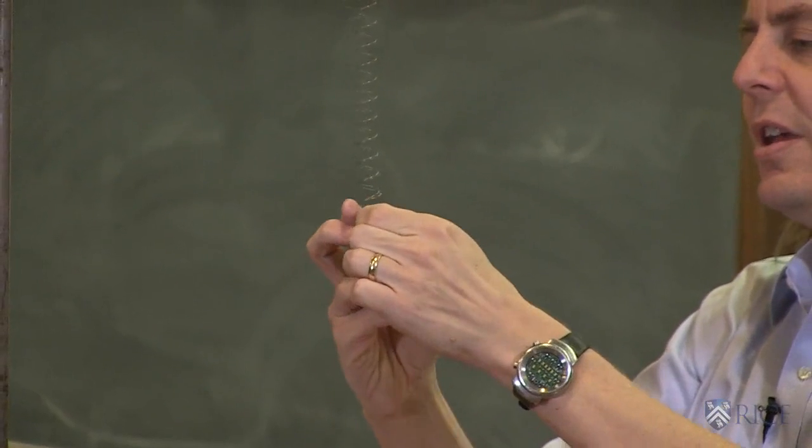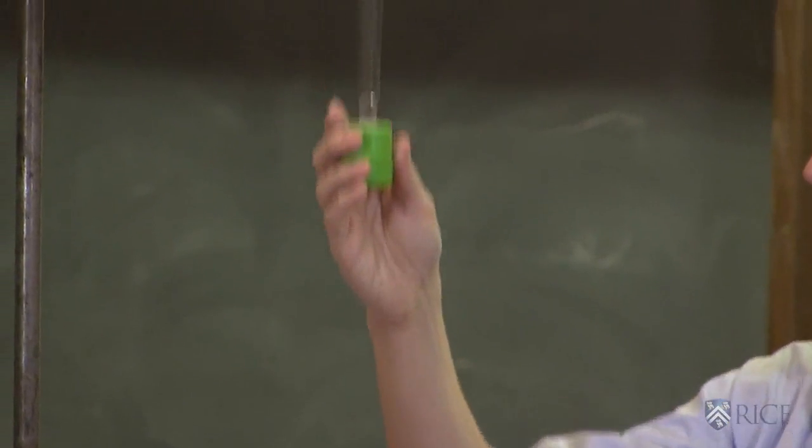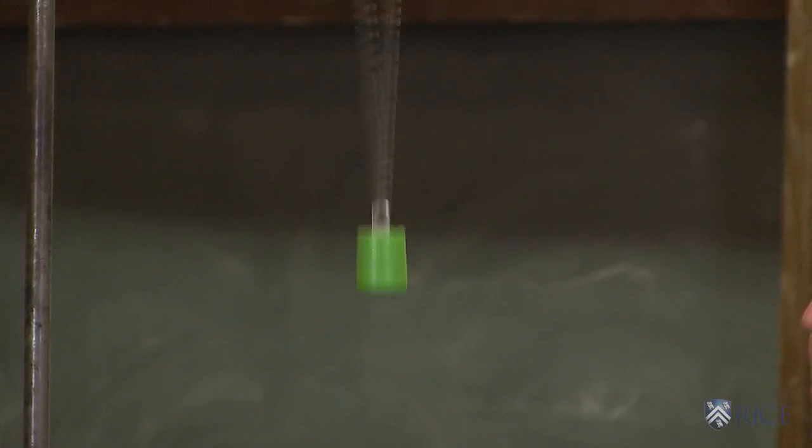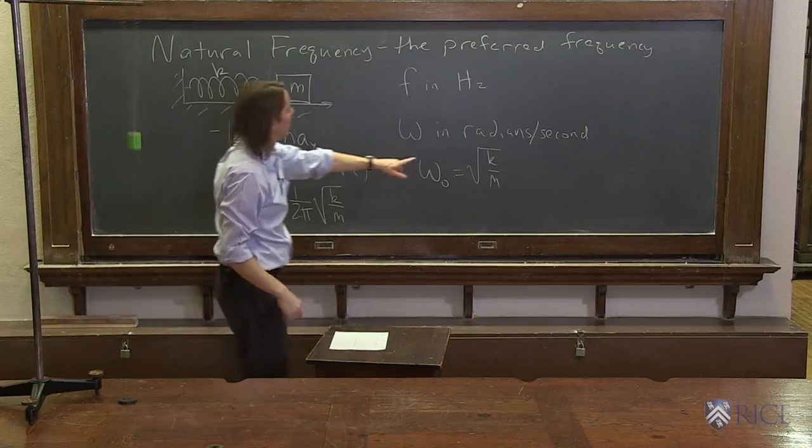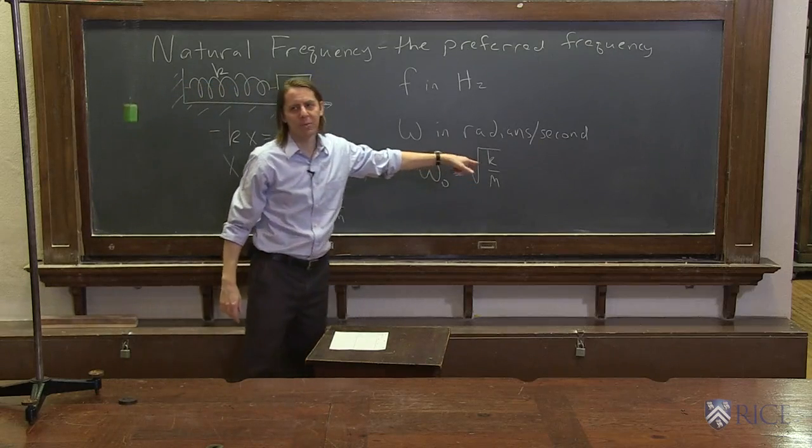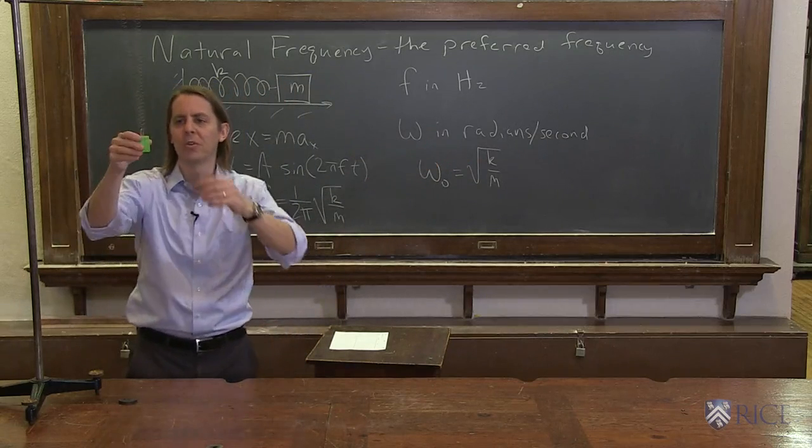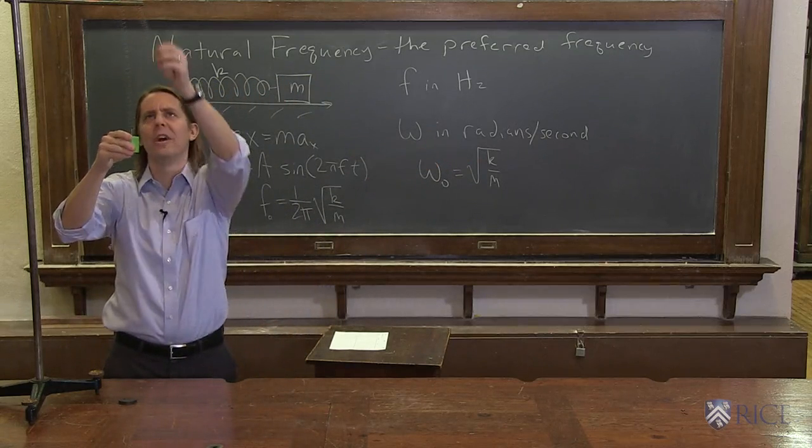So now I'm going to double the spring constant k. And you can see it pulls it up higher. It also moves quite a bit faster. It's not quite twice as fast, because I put a 2 here under the square root. It's going the square root of 2 times as fast, so about 1.4 times as fast.